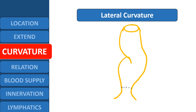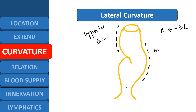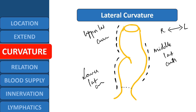When we see the rectum in the coronal plane, we can make out three lateral curvatures. Out of three, two are on the right side and one is on the left side. The upper lateral curvature is on the right side, the middle lateral curvature is on the left side, and the lower lateral curvature is again on the right side.